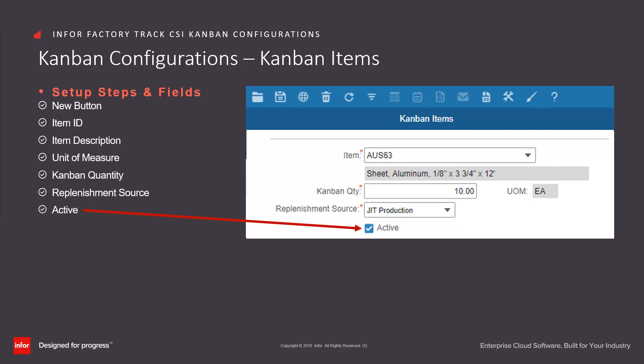Indicate whether to allow this Kanban to be replenished by selecting the Active checkbox. Clear this checkbox to prevent replenishment requests being made for this Kanban. Click on the Save button.